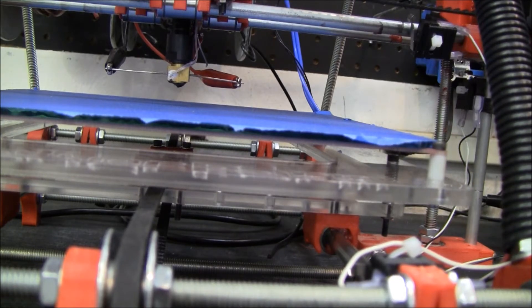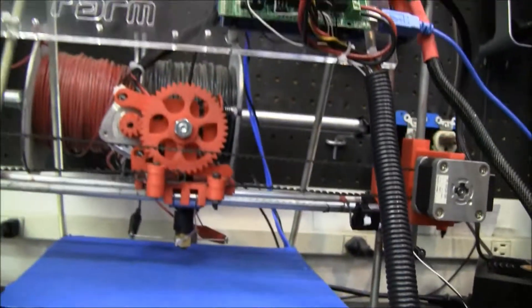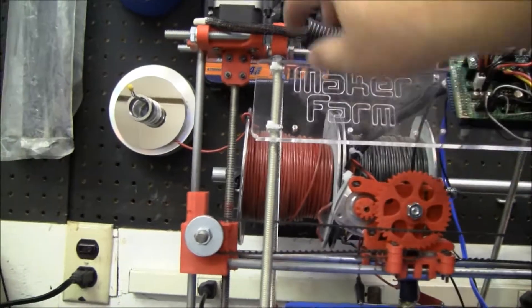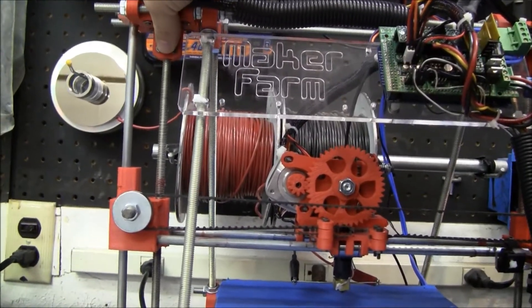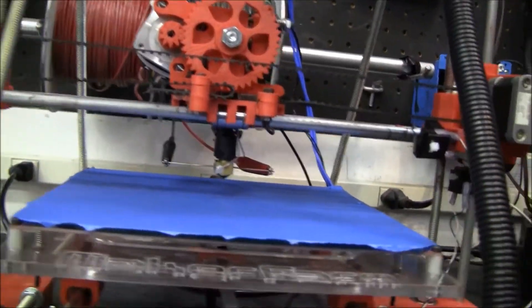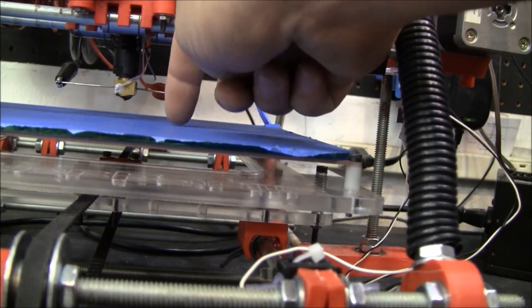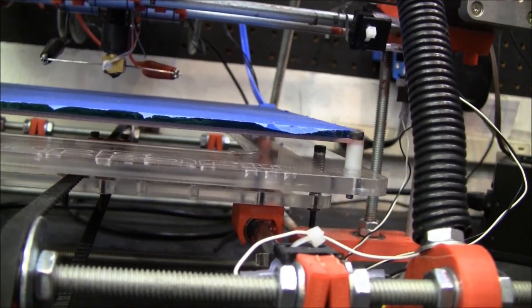When you're starting, you can just go up and grab these and manually turn them with your hand and get the Z-axis and your printhead down as close as you can to the surface.